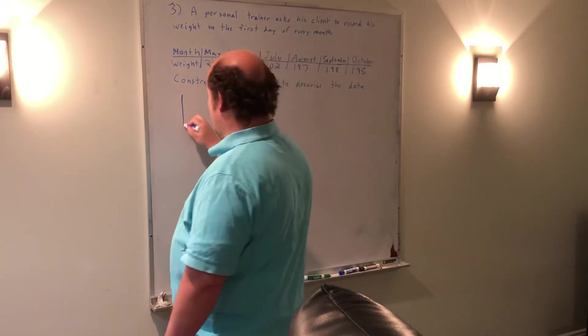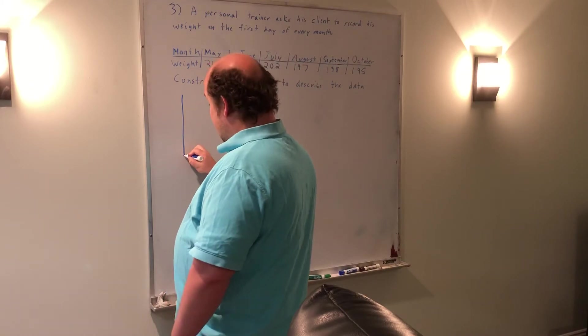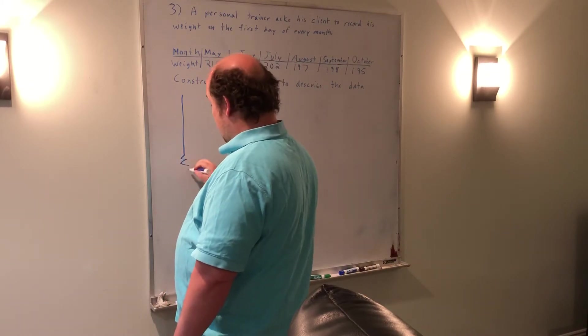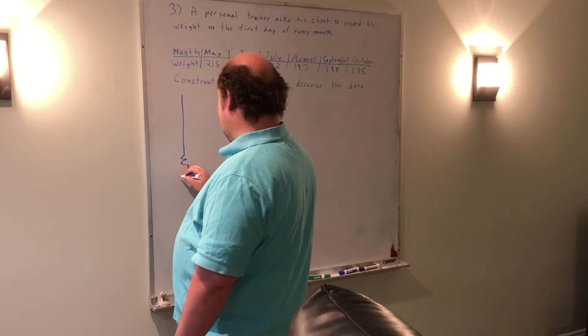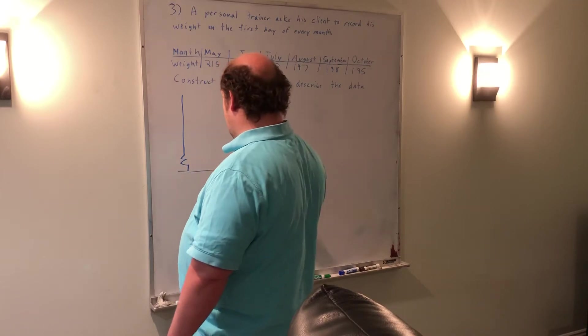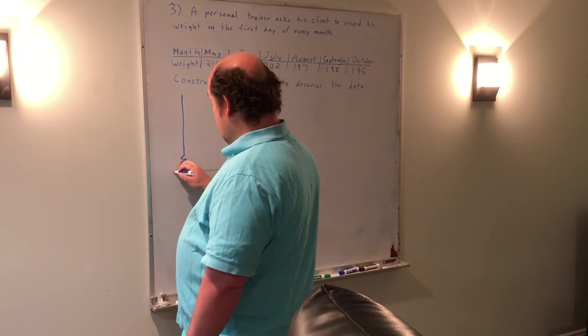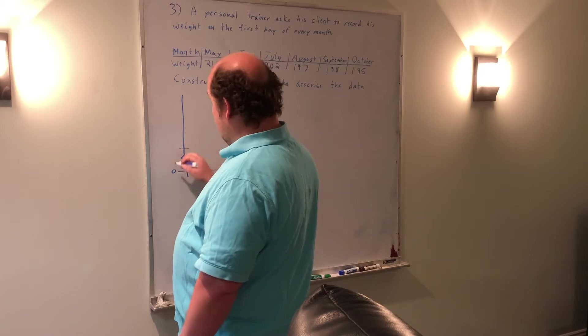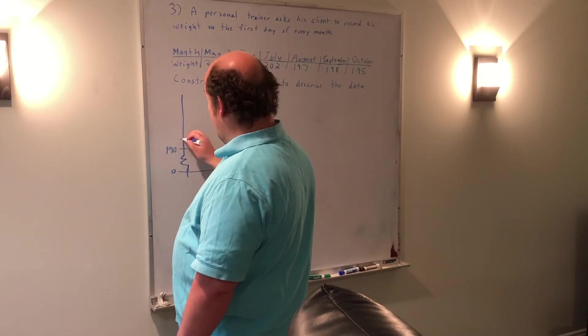So what I'm going to do is draw the regular axis here with a little squiggle. That little squiggle is just telling me that we're not starting at zero. So really here would be zero. I'm going to start at 190 and go up by fives.